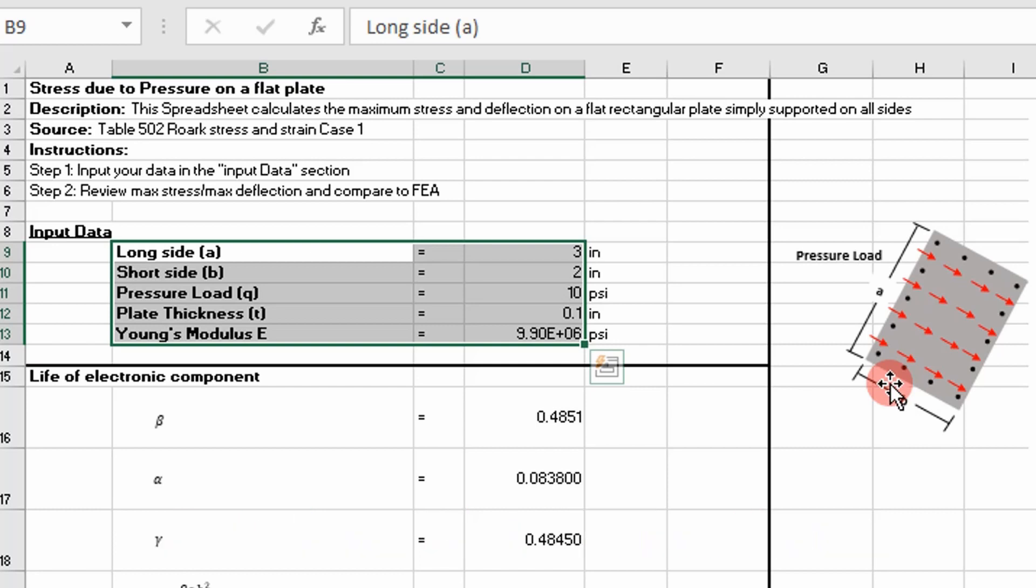Whereas if this rectangular plate was welded down, we would consider that fixed supported. So we're looking at the case where we have a rectangular plate that has been riveted in somewhere and there's some differential pressure across it.